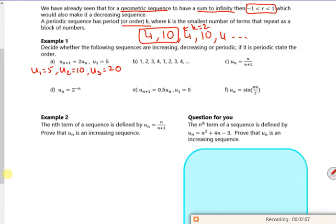r as 2, but the numbers are going up so we know it's increasing. Part B, if you look, it repeats every 4, so this one is periodic. It repeats every 4, not because there's a 4 at the end.